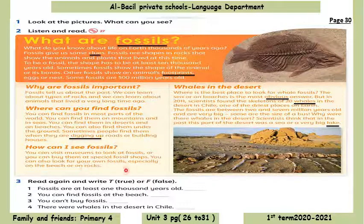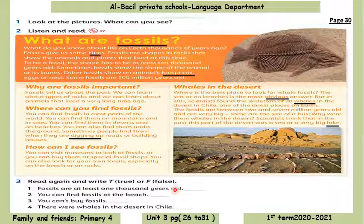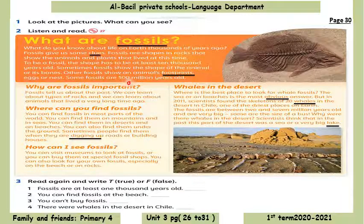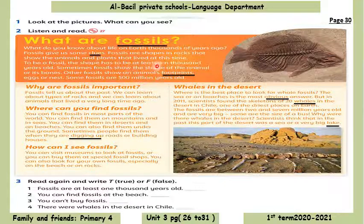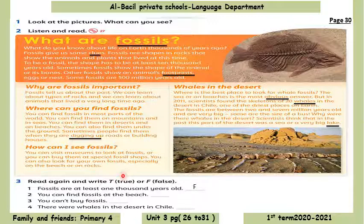Number 1: Fossils are at least 1,000 years old. Very good — it's F, false. Some fossils are 500 million years old; they must be at least 10,000 years old. Number 2: You can find fossils on a beach.